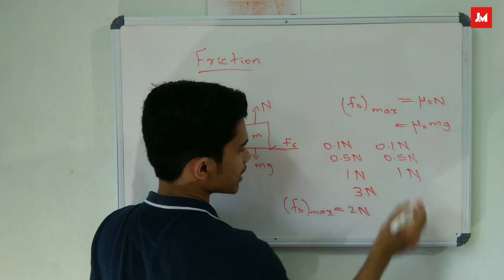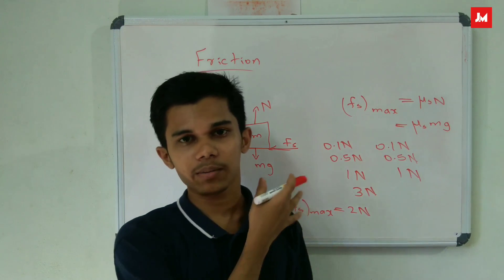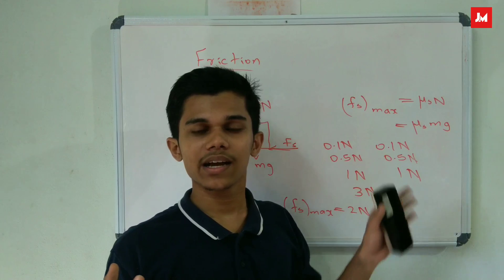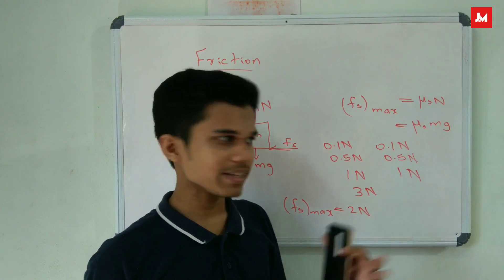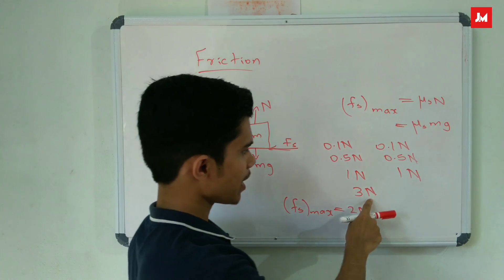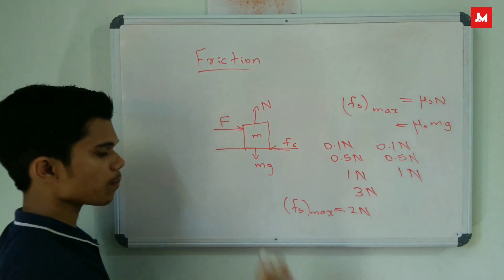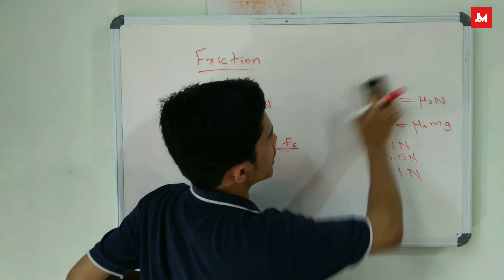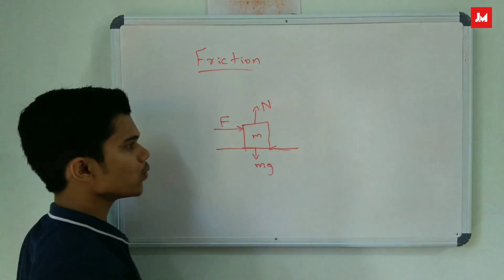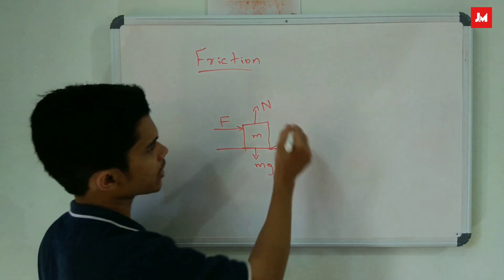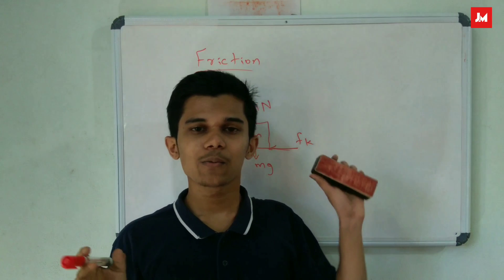For example: Fs maximum is 2N. If the applied force is 2N, the friction is opposite, with maximum 2N. Here, example: if Fs maximum is 3N, the body moves. If Fs maximum is exceeded, the body moves — that is kinetic friction.